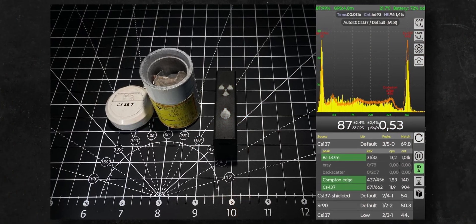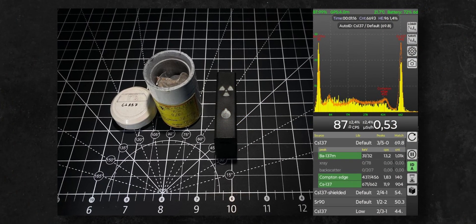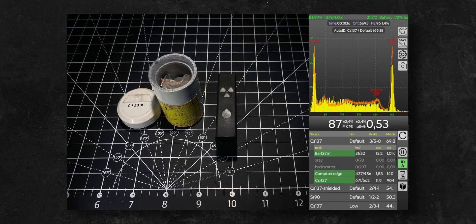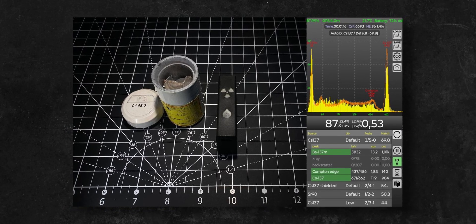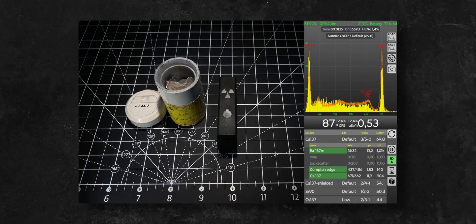This is actually not the first time I've seen contaminated lab equipment. A friend of mine has a lead pig that is contaminated with radioactive cesium-137 as a result of a chemical spill inside of it.